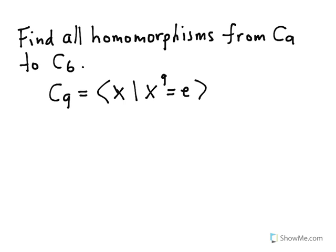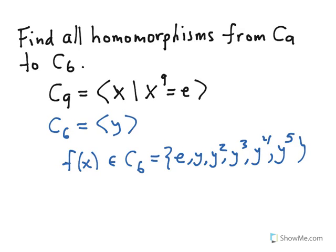Now it's not important usually to write down generators and relations for the range. However, we do need to give some names to the elements in C₆. So let's write down C₆ as being generated by Y, and we could write down such that Y to the 6 equals E, and we know that. But I don't want you to be confused and think that we need to write down the generators and relations for the range. So we're just going to say that C₆ is generated by Y. Now the universal property of a presentation tells us all we have to do to define a homomorphism from C₉ to C₆ is define a map on the generators of C₉, and there's only one generator, which is X. So all I have to do is tell you what F of X is.